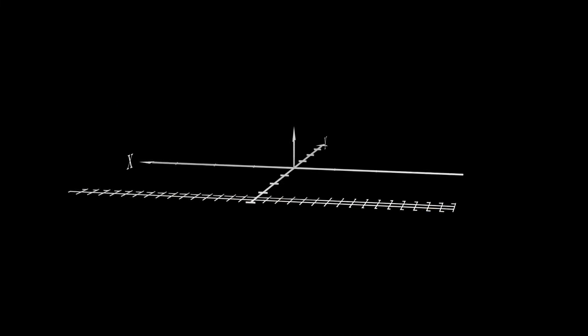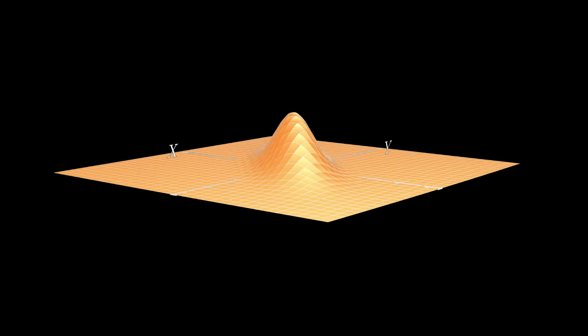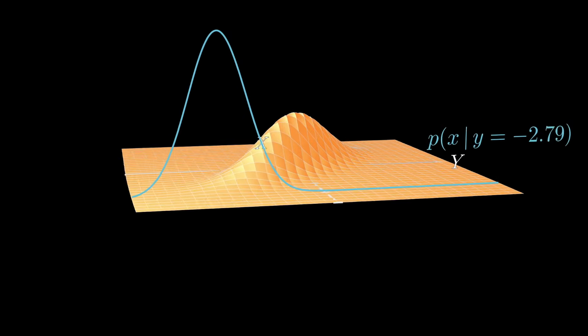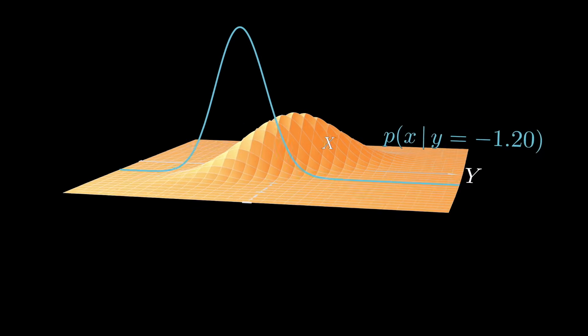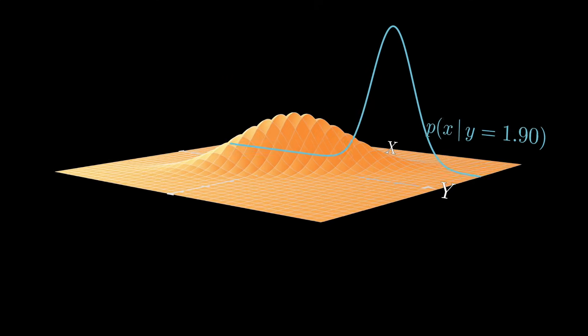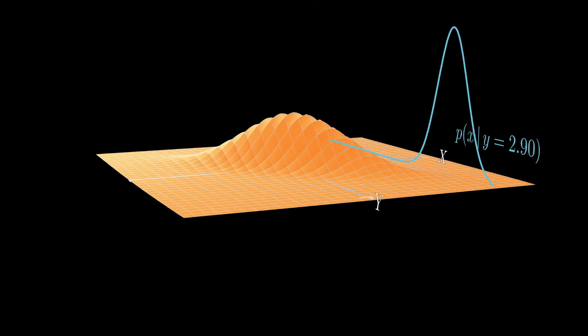It is again a little bit harder to see in the continuous setting, but the concept is the same. The surface represents a joint probability density function over x and y. I'm sweeping along a blue curve that is the conditional distribution over x, given a fixed y.